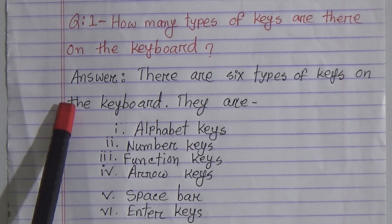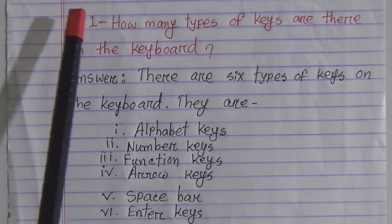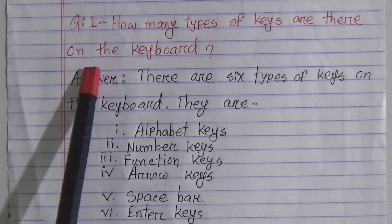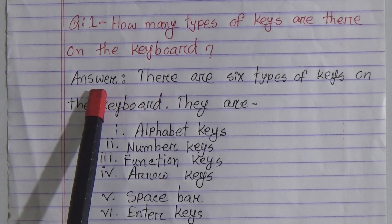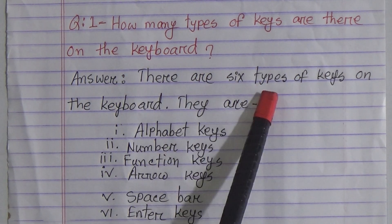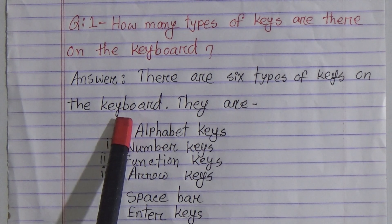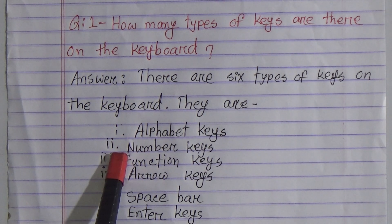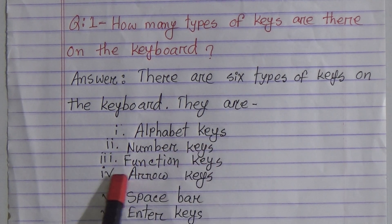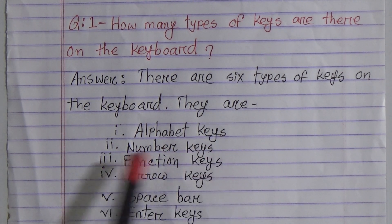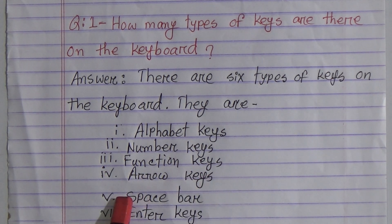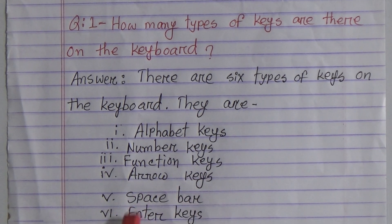Please listen carefully. Question number one: how many types of keys are there on the keyboard? Answer: there are six types of keys on the keyboard. They are: alphabet keys, number keys, function keys, arrow keys, space bar, and enter key.